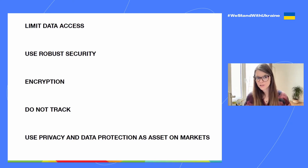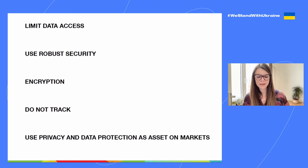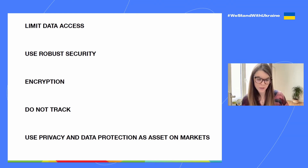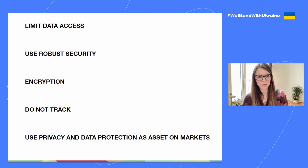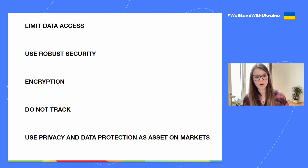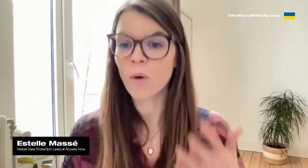When implementing data protection by design and by default programmatically within an organization, consider: from the data you need to collect, how to limit its access to only people who need it; how to prevent unlawful or unnecessary third-party access; how to ensure robust security so that data will be protected — whether through encryption or other security structures around data storage. Do you need to be tracking users? A lot of the time the answer may be no. Many current industry practices exist just because they always happened this way, but we need to challenge those assumptions. Ask yourself: why am I doing what I'm doing? Is it just because it's always been the case? And finally, try to think of privacy and data protection as a differentiator in your market in order to advance your product.